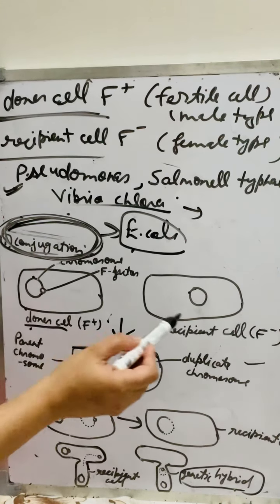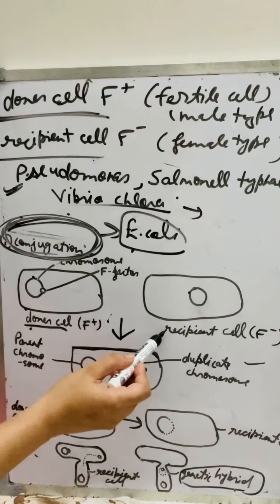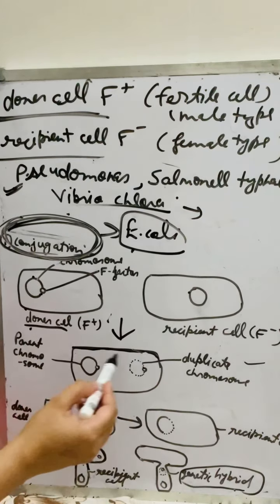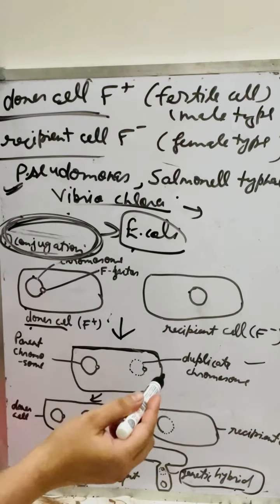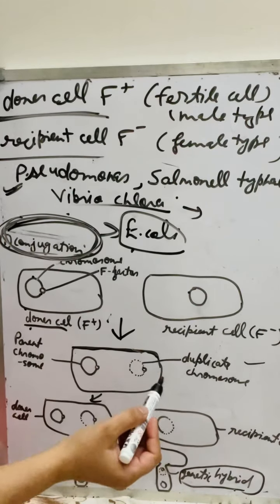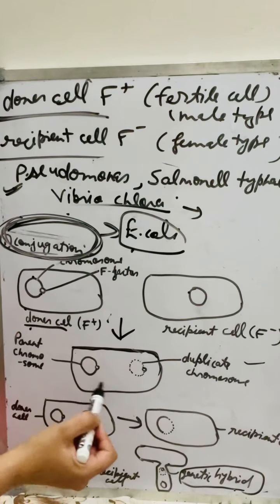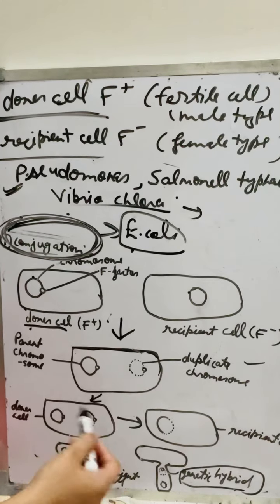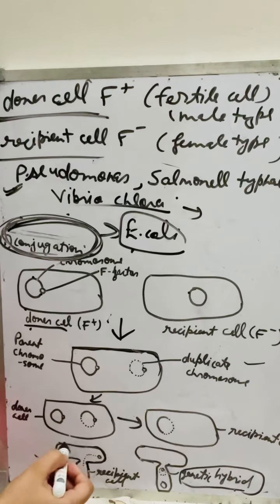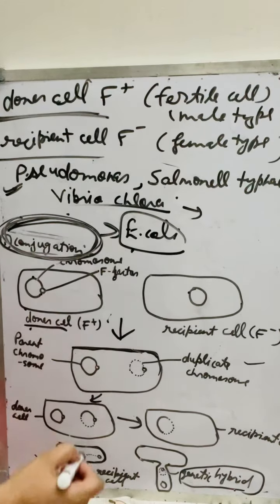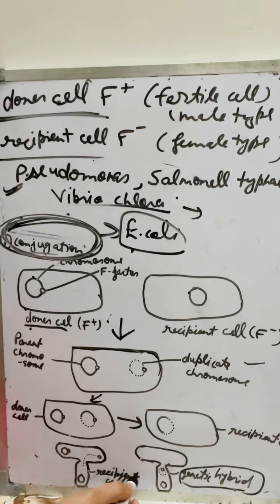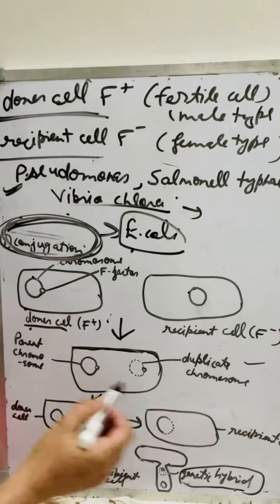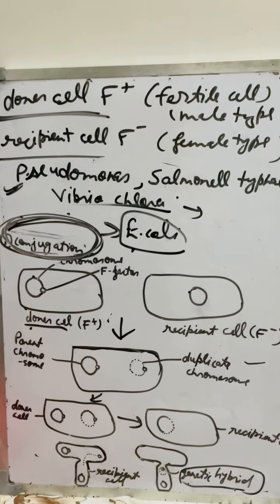Once again, to summarize: there are two different cells — F-positive donor cell and F-negative recipient cell. Before fusion, they start replication and make a new duplicate copy of the chromosome. After replication, they fuse and form a conjugated tube. The F-factor enters into the recipient cell, and a new genetic hybrid chromosome is formed. This complete process is called conjugation.